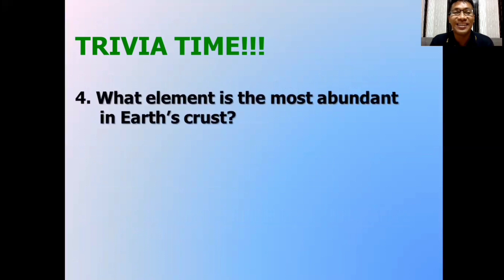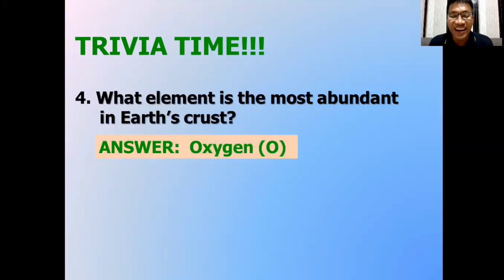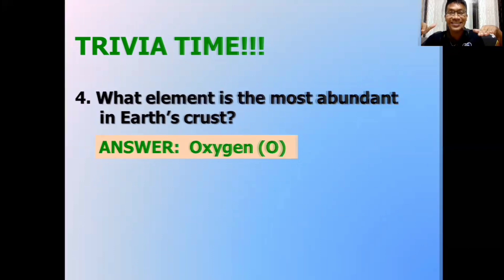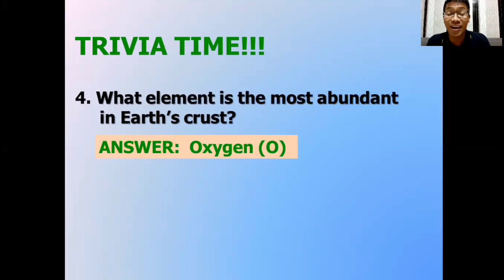Trivia number four. What element is the most abundant in Earth's crust? What is the most abundant in the crust? The correct answer is oxygen. Aside from the idea that we inhale oxygen for us to live, this element can also be found in the Earth's crust. Because the Earth's crust is commonly made up of silicon oxide. So, with oxide, there's oxygen. We will learn further on that in the next few lessons.